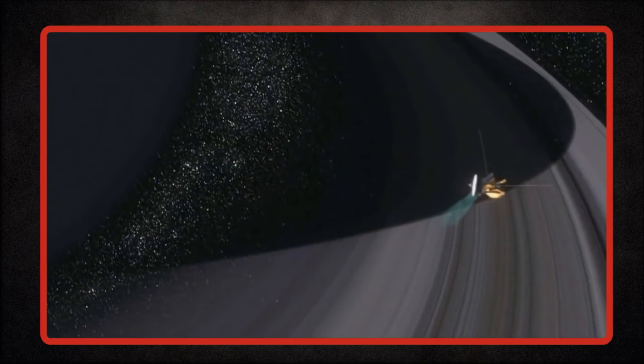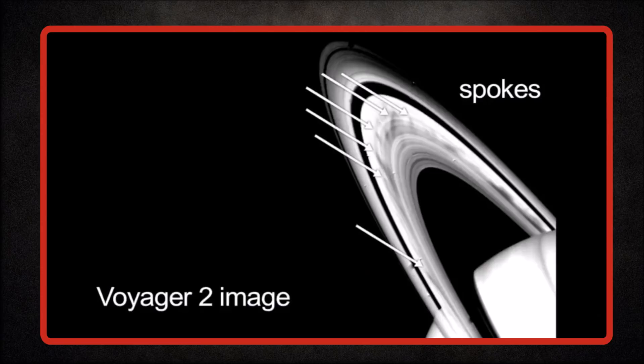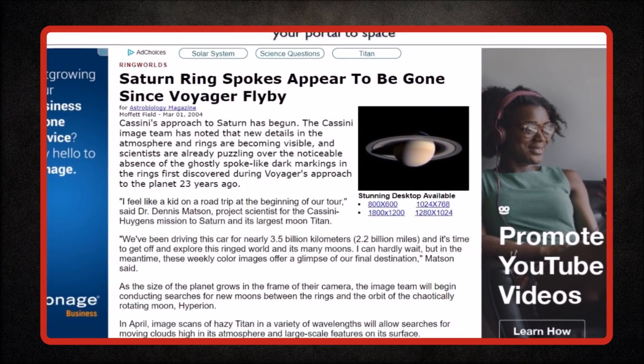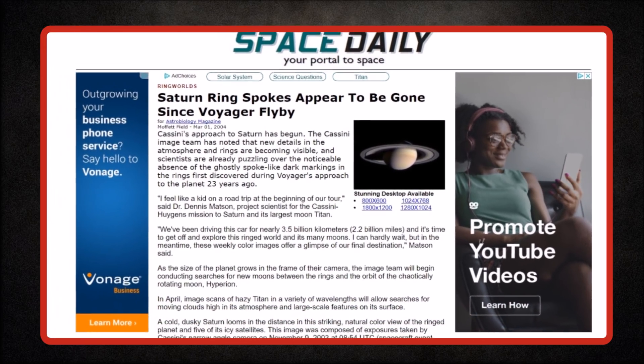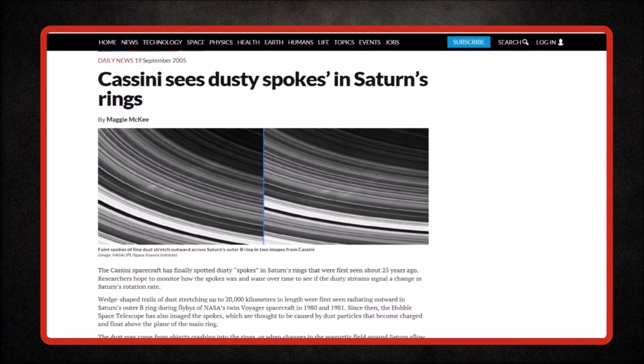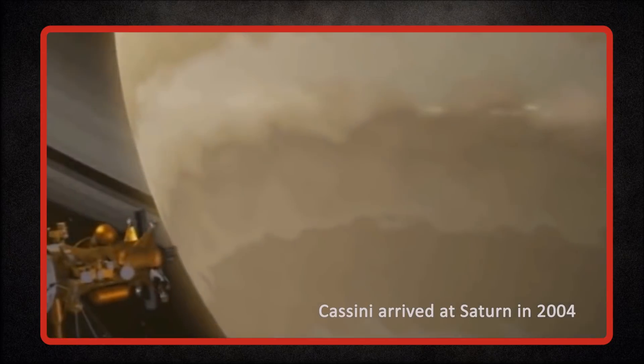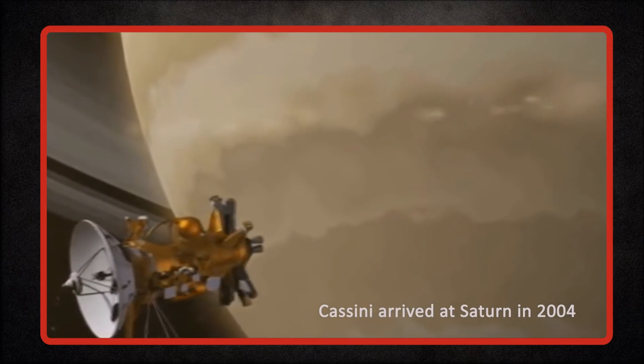After their first observation in 1980s, the spokes were not observed again for about 25 years. Some scientists speculated that there may be some instrumental effects during Voyager's pass by, but they were observed again in the Cassini space probe. The spokes were not visible when Cassini arrived at Saturn in early 2004.